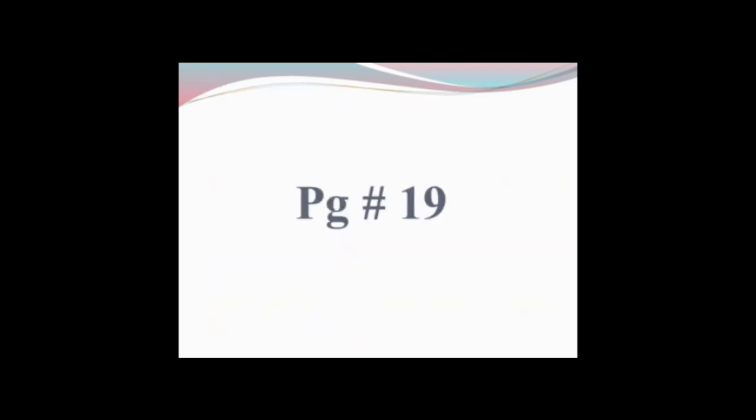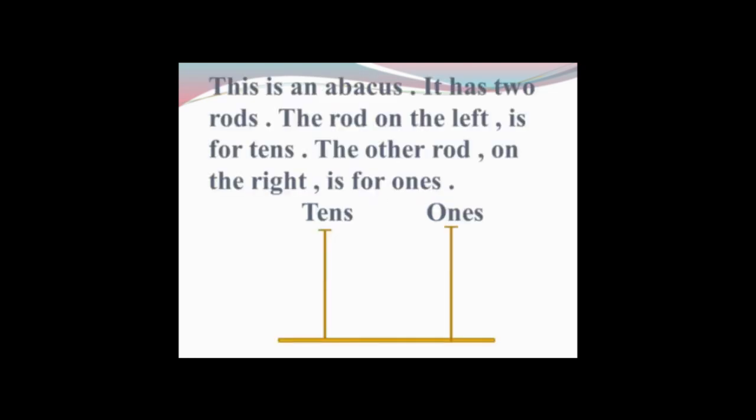Now open your Countdown page number 19. I will explain to you about the abacus. This is an abacus. It has two rods. The rod on the left is for tens and the rod on the right is for ones. On the right side we can see the ones rod, and on the left side we can see the tens rod.